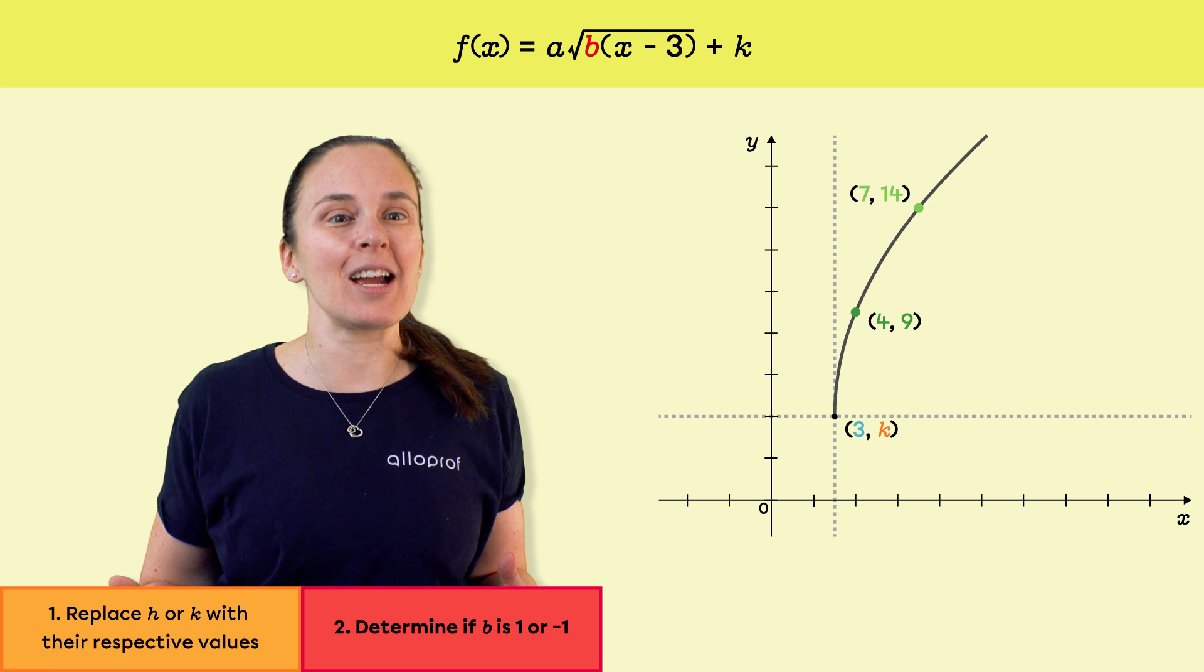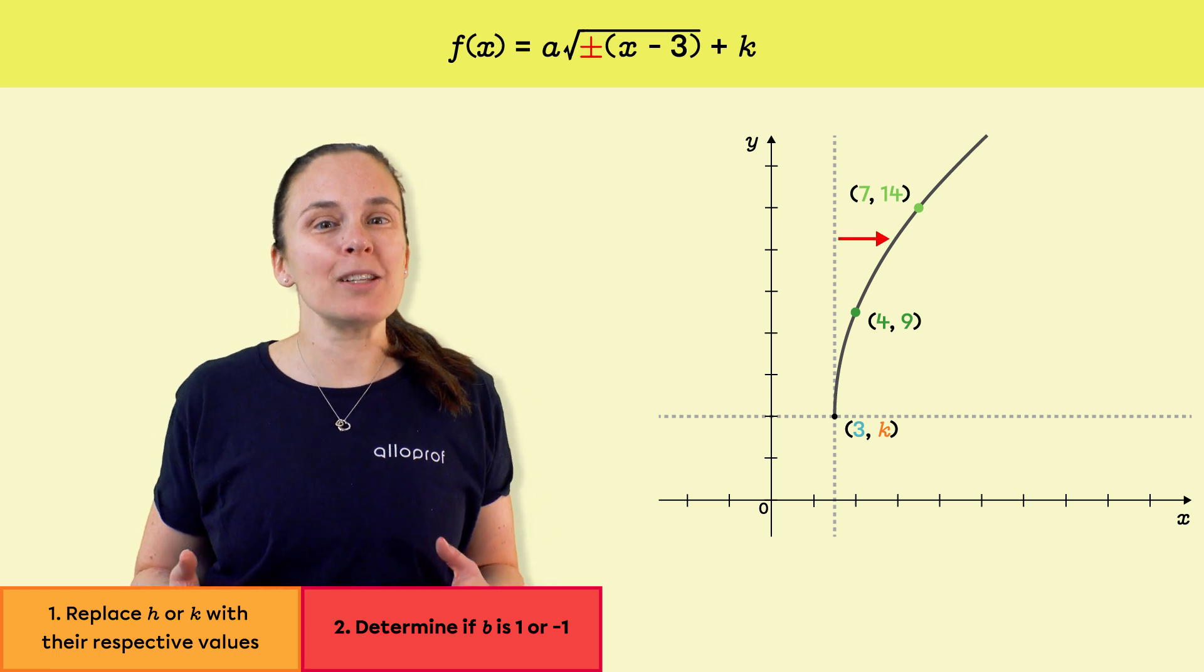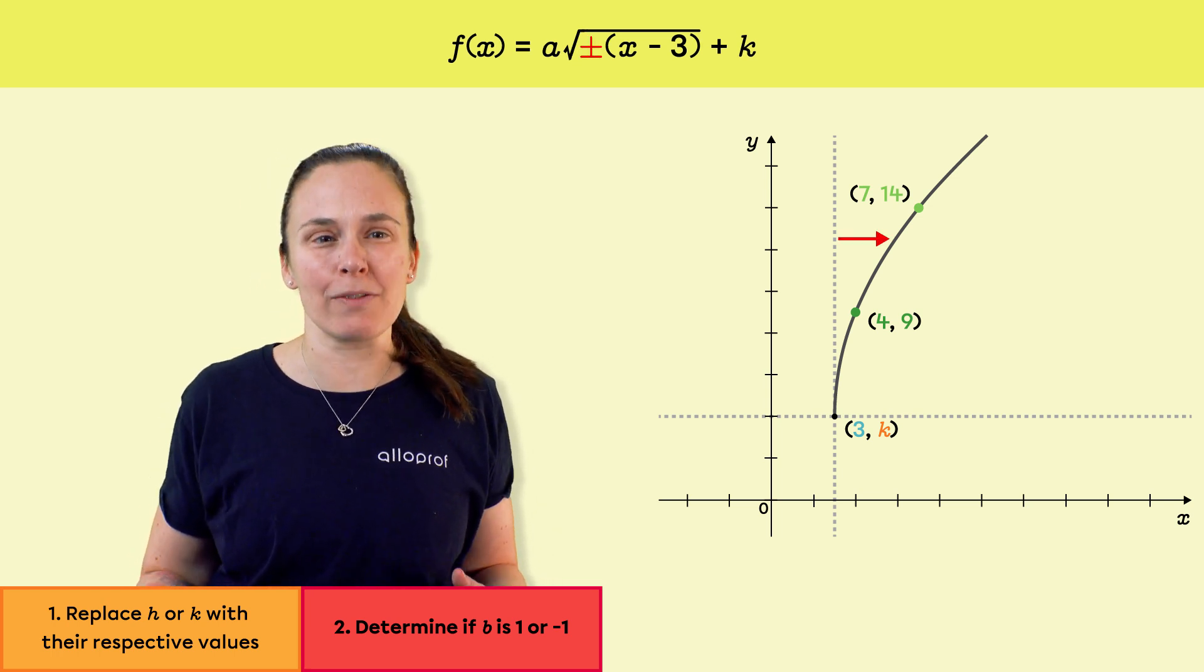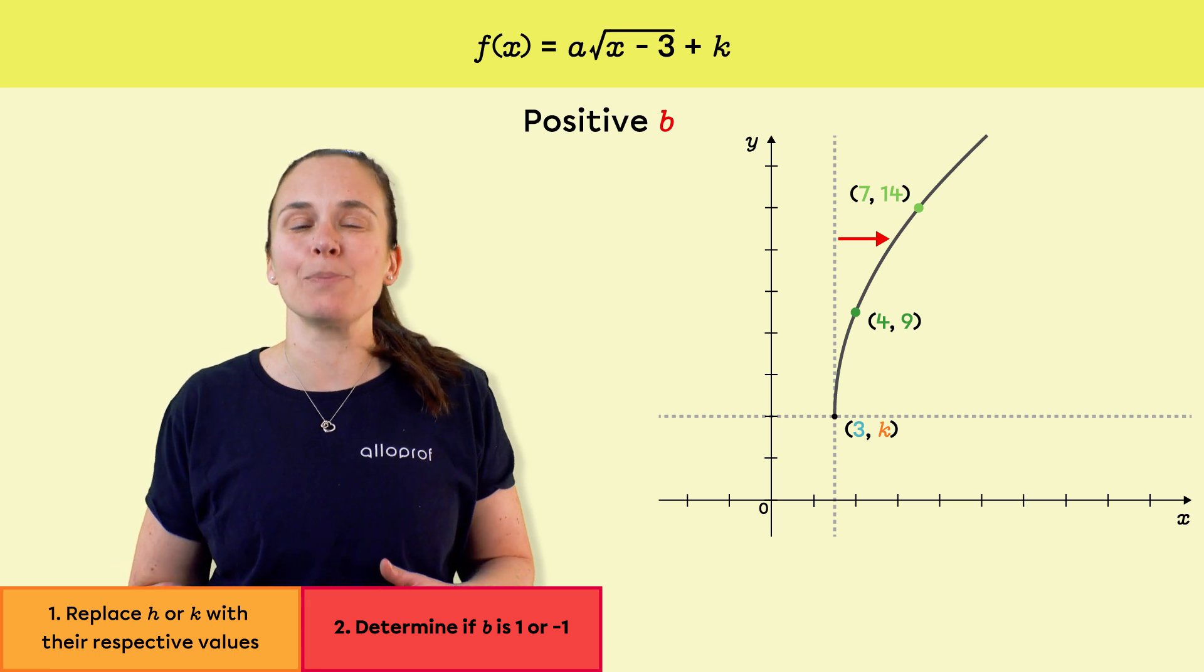Next, let's determine the sign of parameter b. Since the points 4,9 and 7,14 are located to the right of the vertex, parameter b is positive.